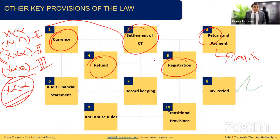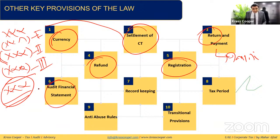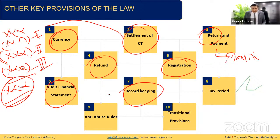Every taxable person must register for corporate tax — there is no registration threshold regardless of income level. Audited financial statements are not currently required, but the minister may require them in future. Businesses — including exempt entities — must keep records for a minimum of seven years from the end of the relevant tax period to justify any claims to the respective authority.